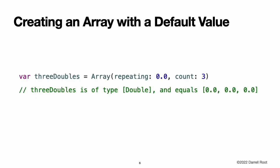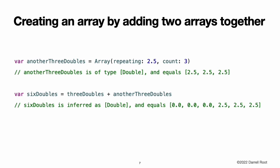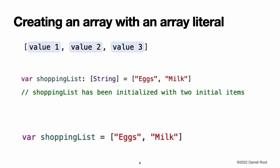Creating an Array with a Default Value. Swift's array type also provides an initializer for creating an array of a certain size with all of its values set to the same default value. You pass this initializer a default value of the appropriate type called repeating, and the number of times that value is repeated in the new array called count. Creating an Array by Adding Two Arrays Together. You can create a new array by adding together two existing arrays with compatible types using the addition operator. The new array's type is inferred from the type of the two arrays you add together.